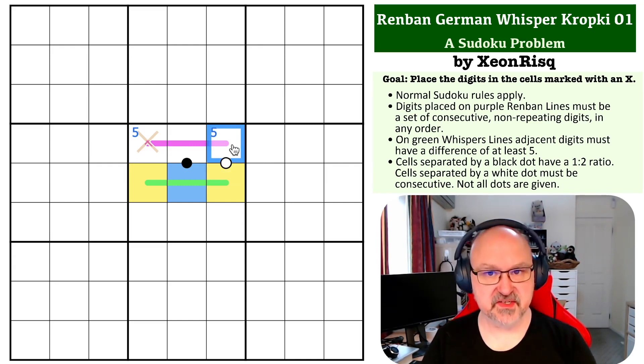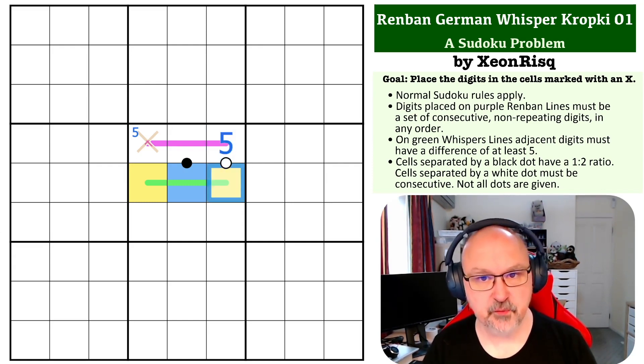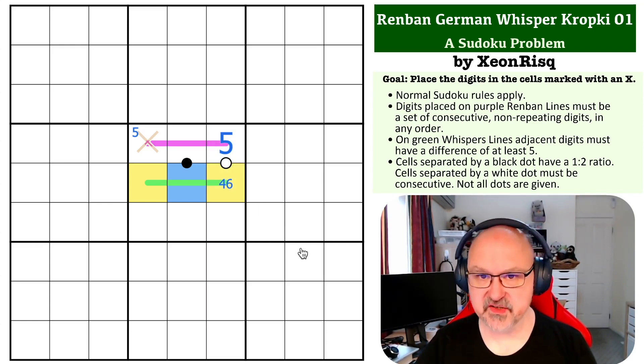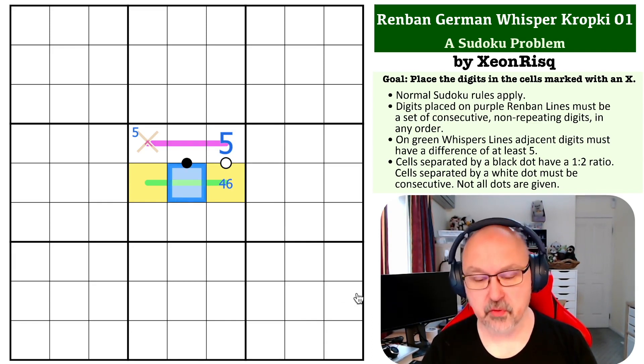Well, I'm actually going to put the digits in to explain it, but you can do this in your head. If you put five on the consecutive dot, consecutive with the five is four or six. Four or six on a whisper line is almost as constrained as five. The next digit that can go along from a four is a nine, which can't be put on a black dot, but we'll get to that in a second. And the next digit along from a six is a one. They're the only digits that are five away from four or six.